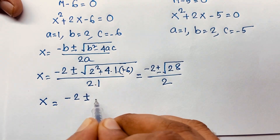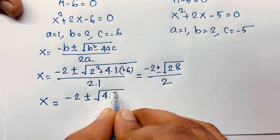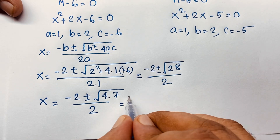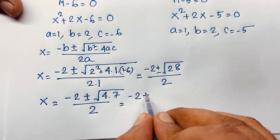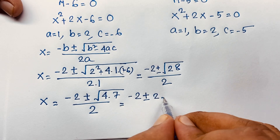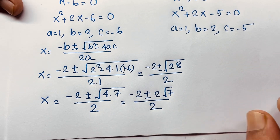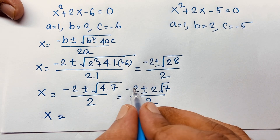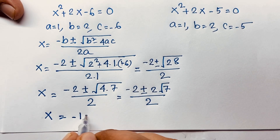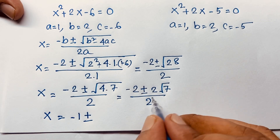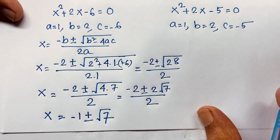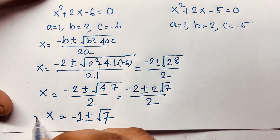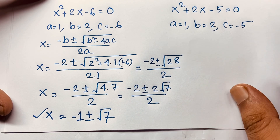Simplifying: square root of 28 equals square root of 4 times 7, which is 2 root 7. So x equals (negative 2 plus or minus 2 root 7) over 2, giving x equals negative 1 plus or minus square root 7. These are two real solutions.